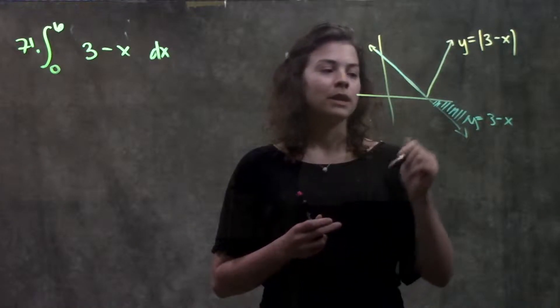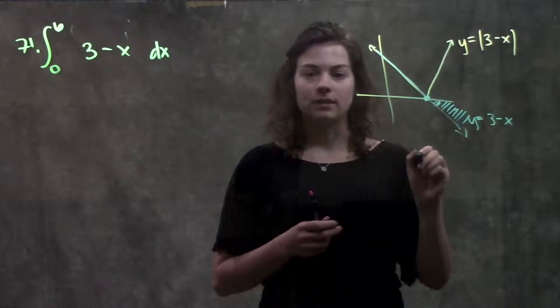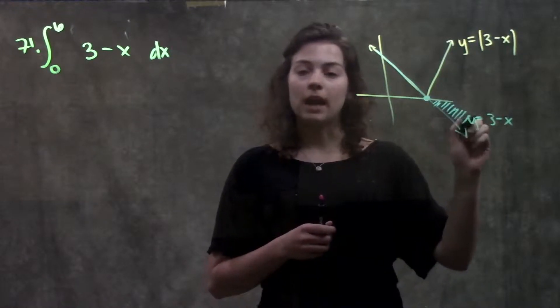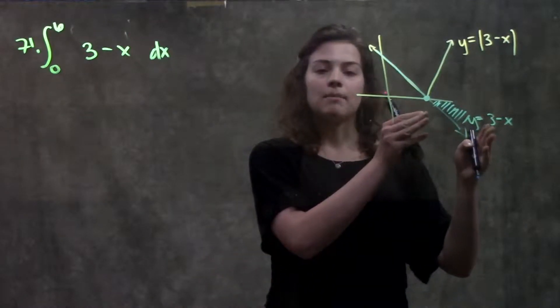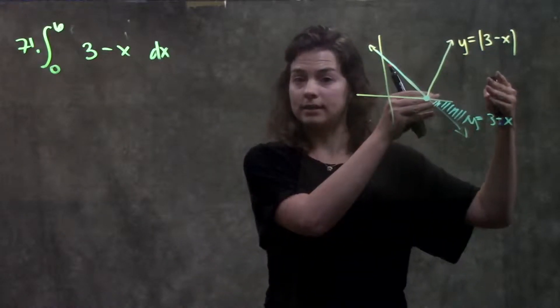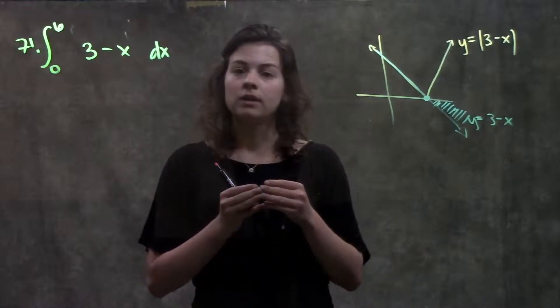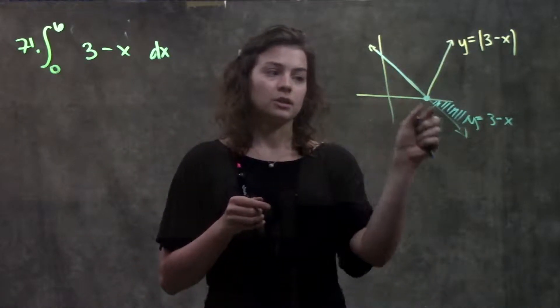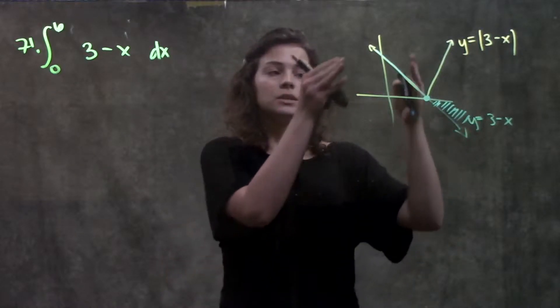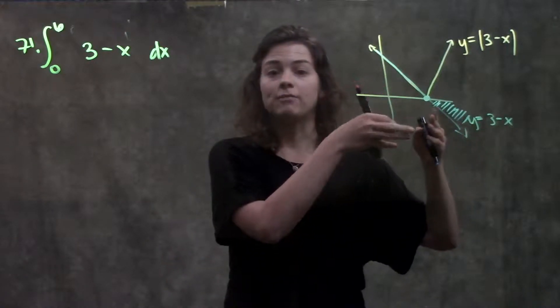What I'm going to do is figure out what this point is. Where does this new function become negative? I'm going to take that part and just make it positive. So what I'm going to do, figure out where this function equals zero, split up the integral into this section and this section.